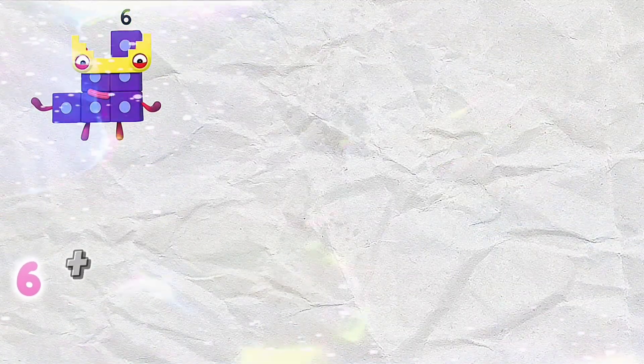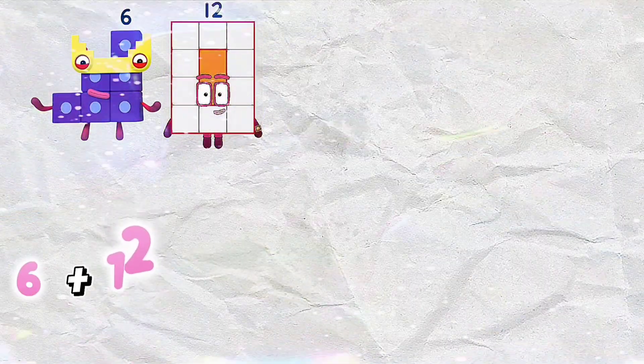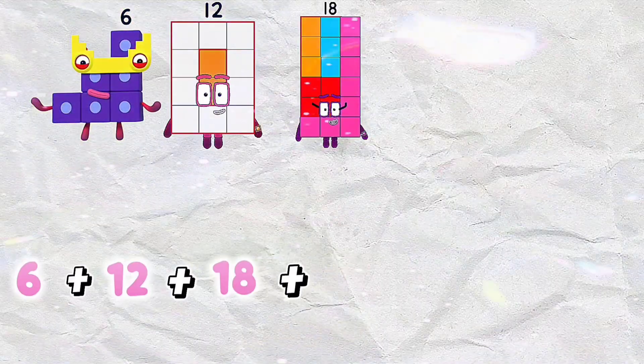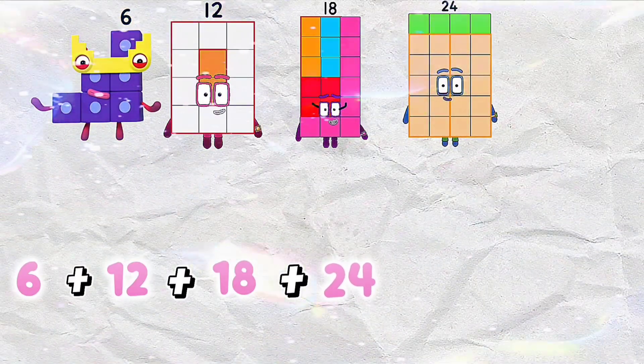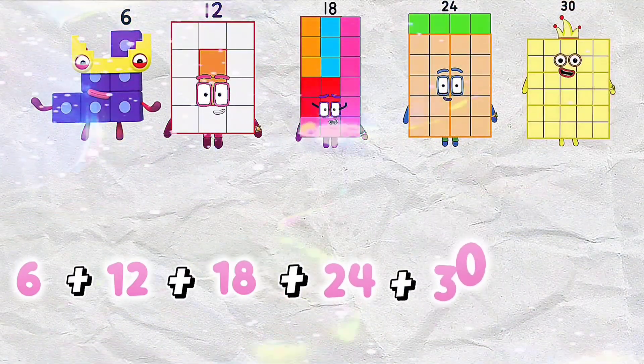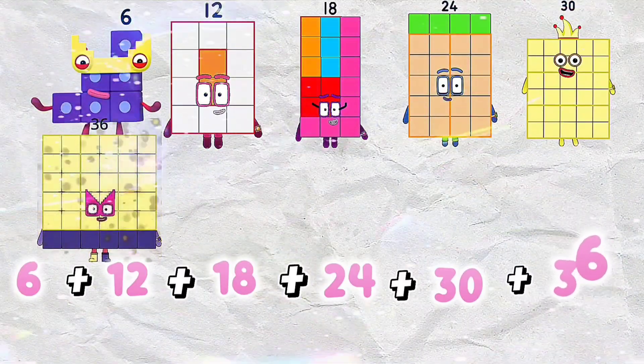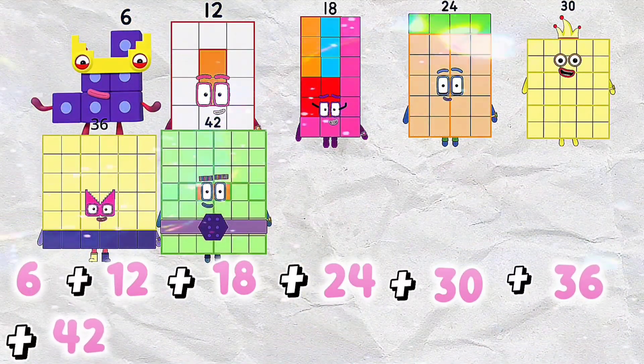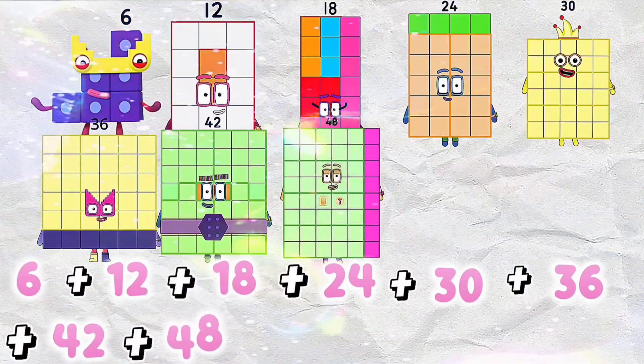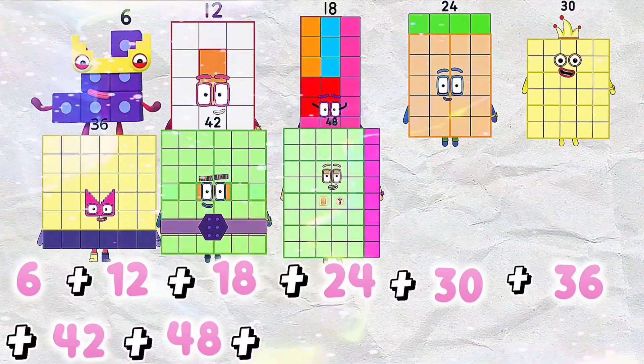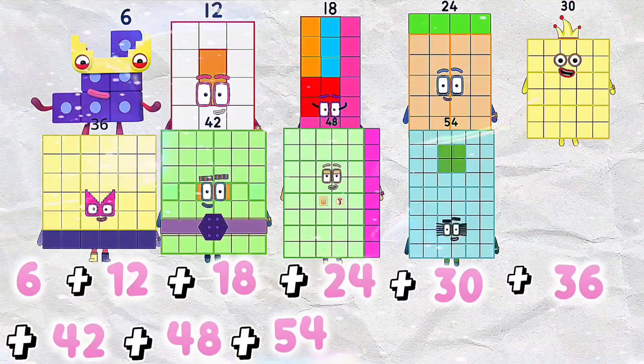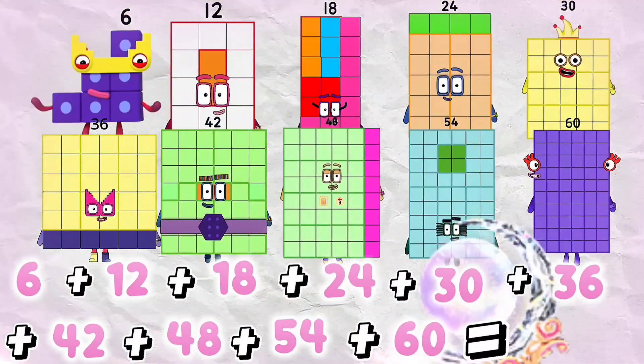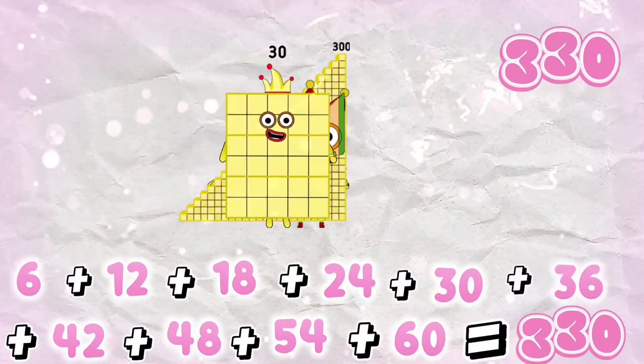6 plus 12 plus 18 plus 24 plus 30 plus 36 plus 42 plus 48 plus 54 plus 60 is equals to 330.